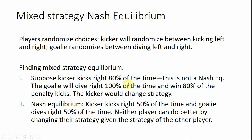Suppose the kicker kicks right 80% of the time — this is not going to be a Nash equilibrium. Why? The goalie will dive right 100% of the time and win 80% of the penalty kicks. The kicker is not going to be happy losing 80% of the penalty kicks, so the kicker is not playing their best randomized strategy in this scenario.